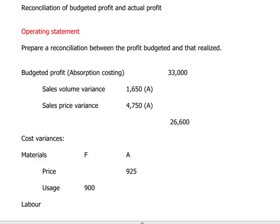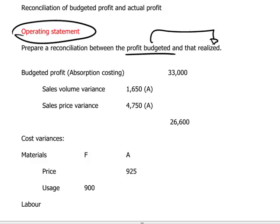Welcome to the EXP Group. Today in our discussion of ACCA paper F2, Management Accounting, we're going to talk about operating statements. This builds on the previous discussion we had concerning variance analysis — variances which explain the divergence between budgeted numbers and actual results achieved. The operating statement brings all of that together and explains the difference between profit that was budgeted and actual profit achieved.